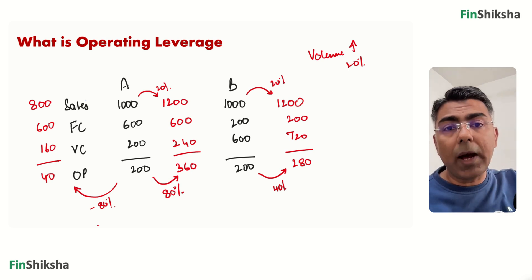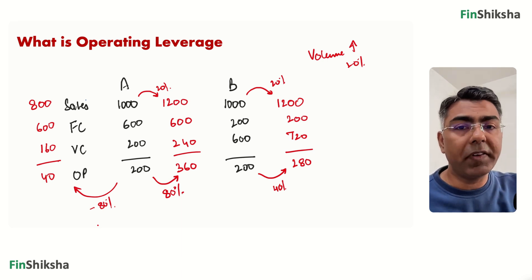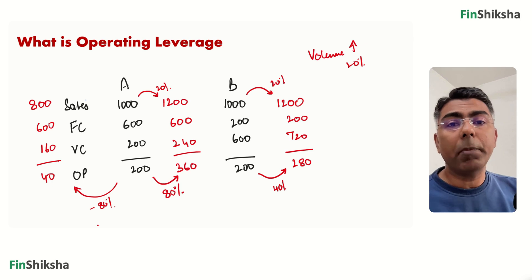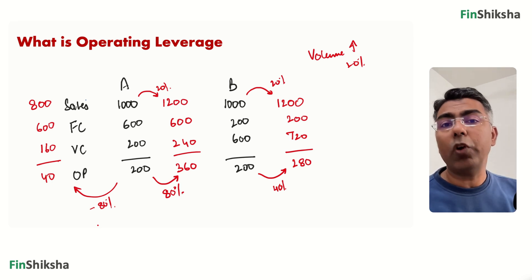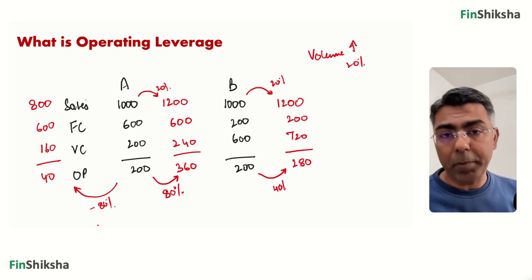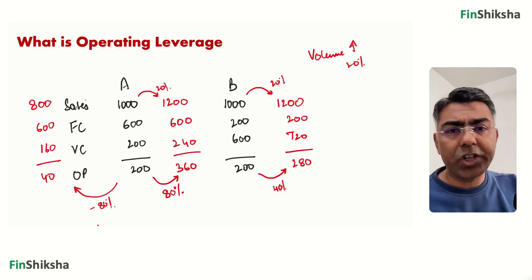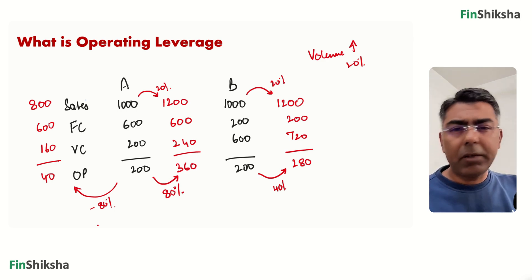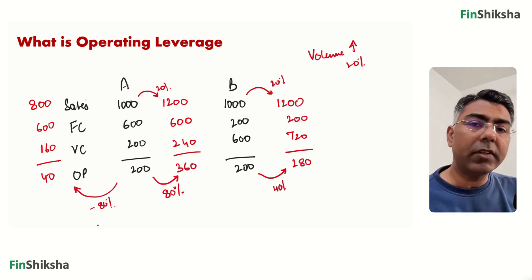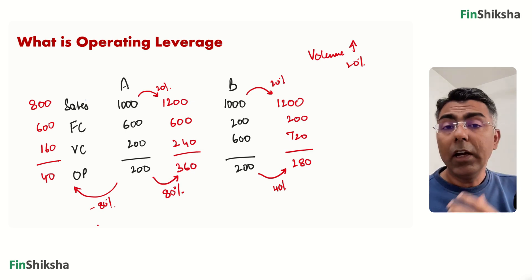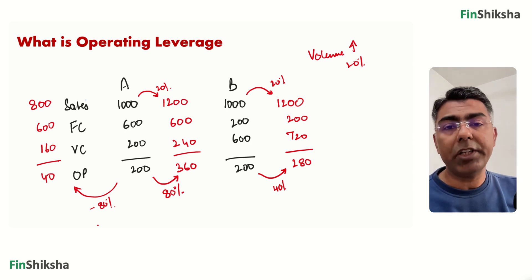It's a double-edged sword. When sales goes up, because not all costs go up in the same proportion — some are fixed in nature — the company can show a higher degree of profitability. A company with higher fixed costs will have a higher degree of operating leverage. The formula for degree of operating leverage is change in operating profit divided by change in sales. But the concept is more important: higher fixed cost means bigger magnification of earnings when sales changes.